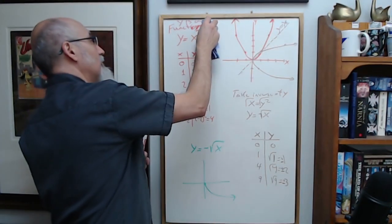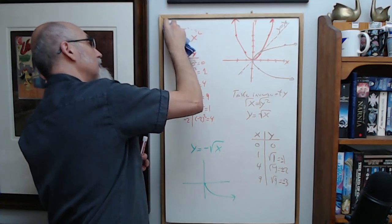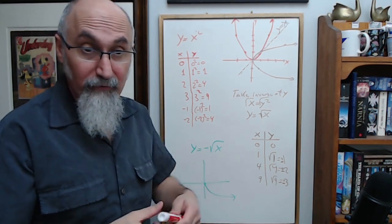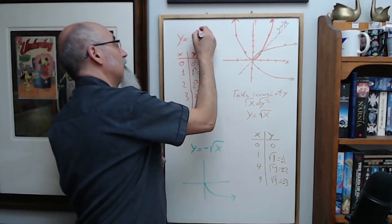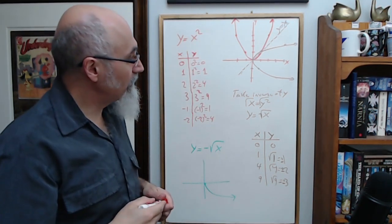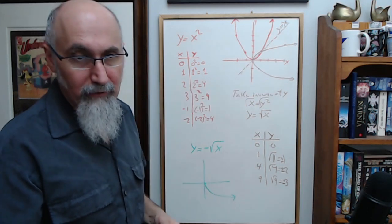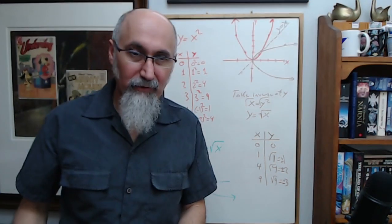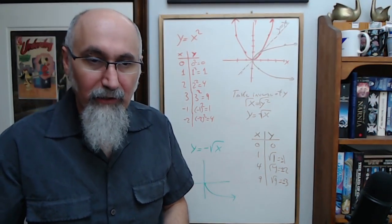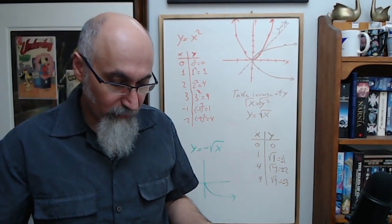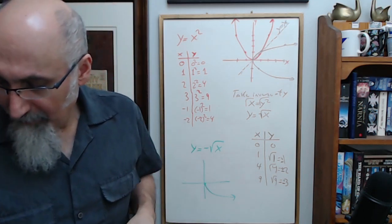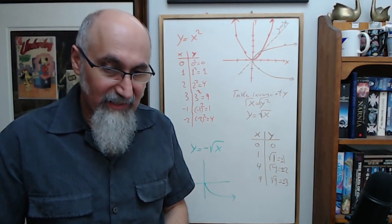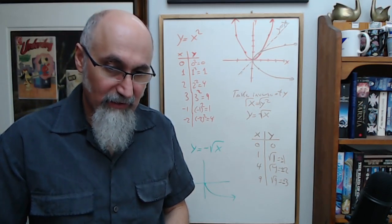If you say this is not a function, or if you don't specify, it's arguably legitimate to leave both values. It really depends on the teacher and context — it's dependent on how you're learning it.